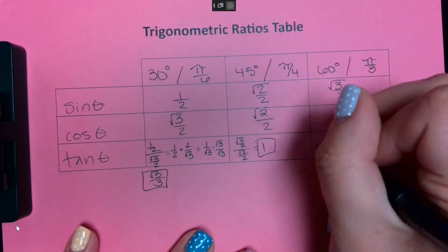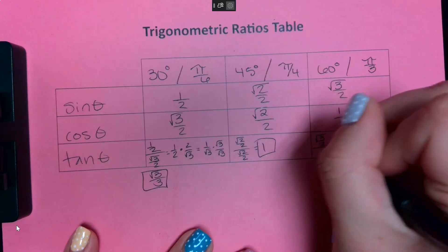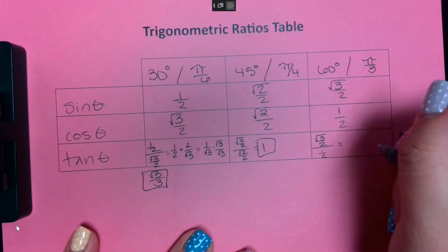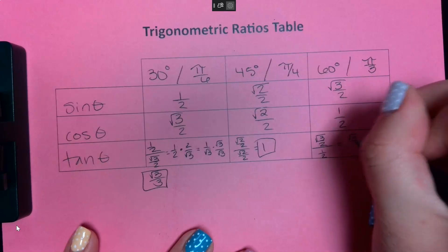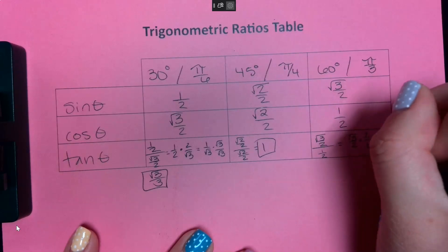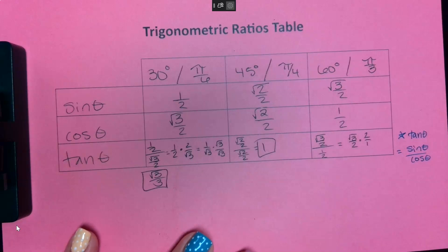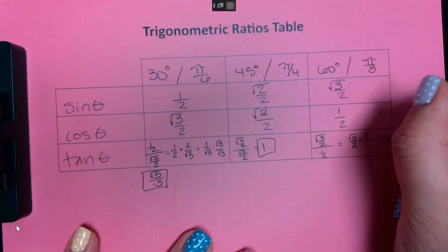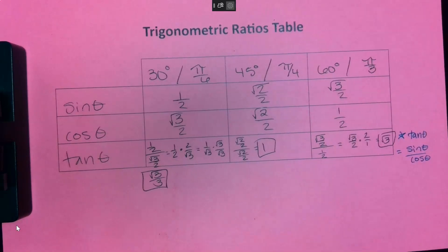And the last thing is the square root of three over two divided by one over two. So again, I can flip the bottom fraction and multiply.